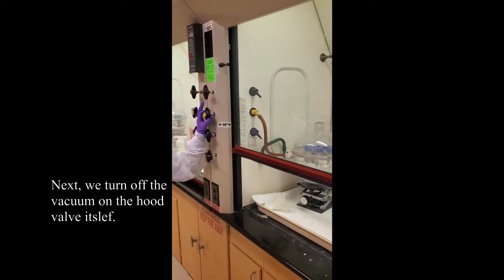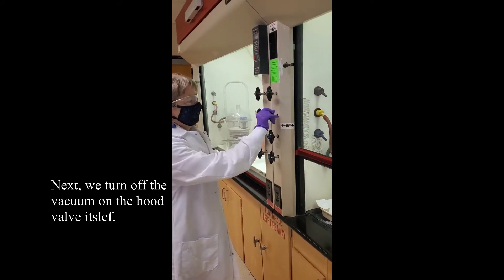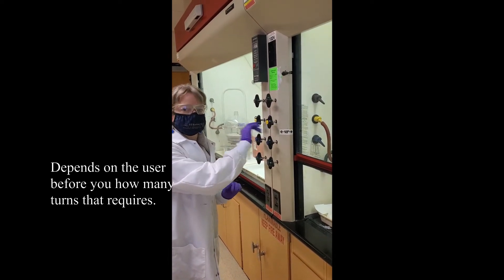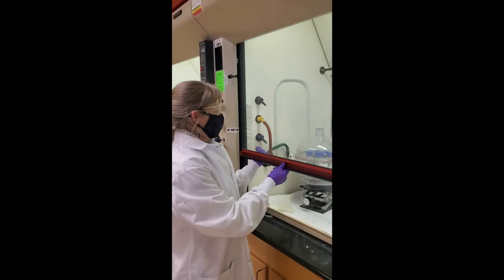Next, we turn off the vacuum on the hood valve itself. It depends on the user before you how many turns that requires, how strong they are.